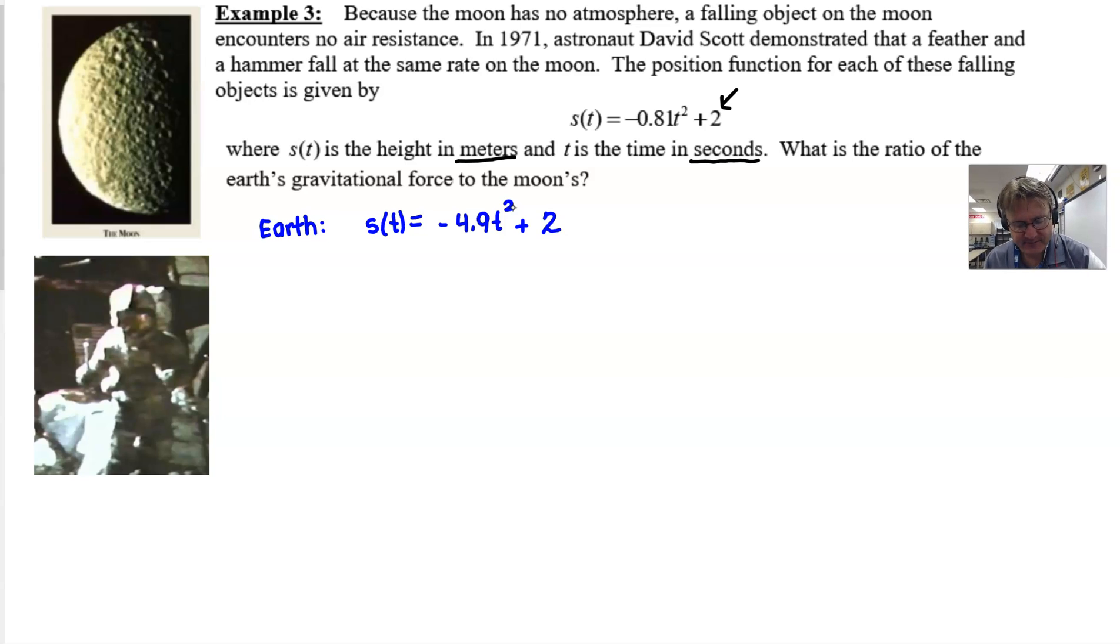All right, so how do we figure this out? Well, pretty simple. To find that ratio, we just simply take the Earth's coefficient, -4.9, and we'll divide it by that Moon's coefficient, -0.81.